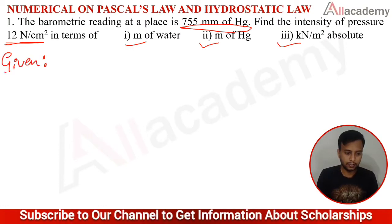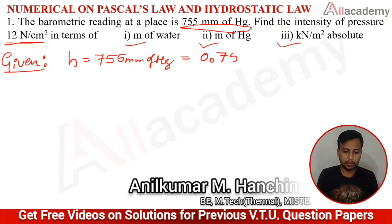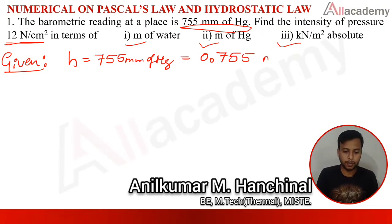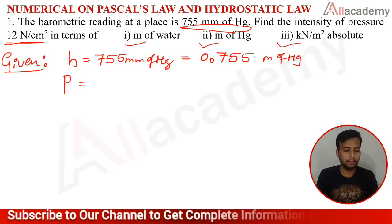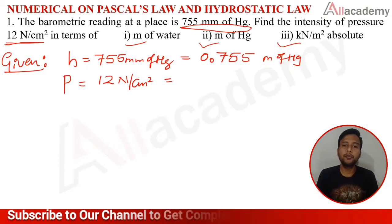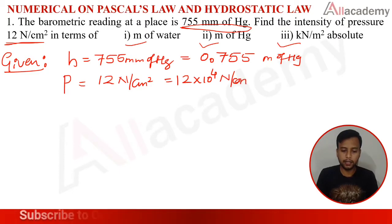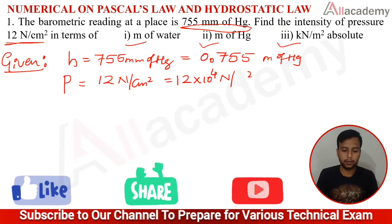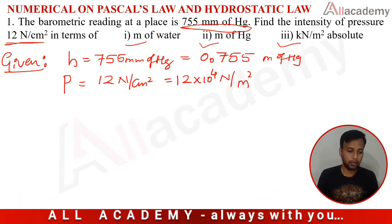Given data: H = 755 mm of Hg, converting to meters gives 0.755 m of Hg. The pressure P = 12 N/cm², converting to N/m² gives 12 × 10⁴ N/m². First we need to calculate the head in terms of meters of water.